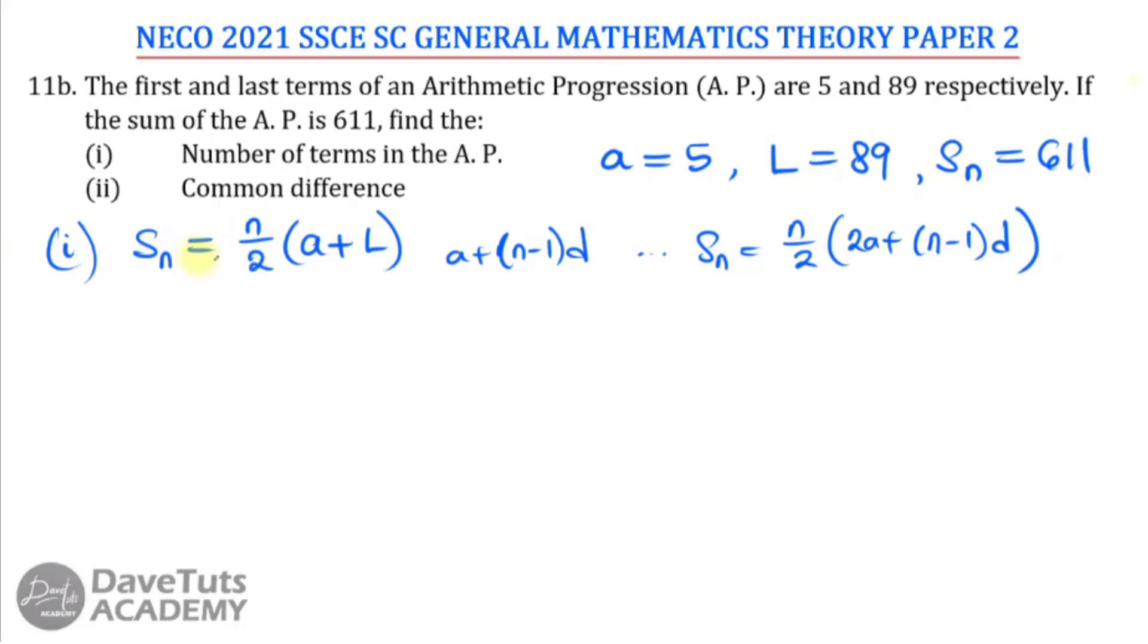We will make use of this very first one here, and then we can say that we have the sum we are given as 611. We are looking for the number of terms N. So N over 2, A is 5, L is 89. Therefore, if you cross multiply 2 times 611, I can just say N in this case would be 2 times 611 over 5 plus 89, that would be 94 over 94. And here we can cut, we can say 2 can go 1, 2 in 94, that would be 47.